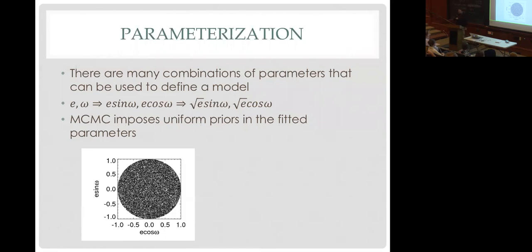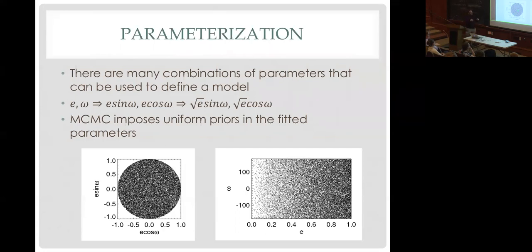If you imagine throwing random darts in the parameter space of e·sin(ω) and e·cos(ω), you get a nice uniform distribution — that's exactly the prior for the MCMC algorithm. If you could point to e=0 on that plot, it would be right in the middle, and growing eccentricities would be concentric rings around that. So e=1 is the large outer circle. You've got a much higher chance of hitting eccentricity of one and almost zero chance of hitting eccentricity of zero. When you translate this scatter plot into e–ω space, you end up with a linear gradient where there's almost no power at eccentricity of zero and a ton of power at eccentricity of one — almost exactly the opposite of what we expect for a transiting planet. That's really bad.